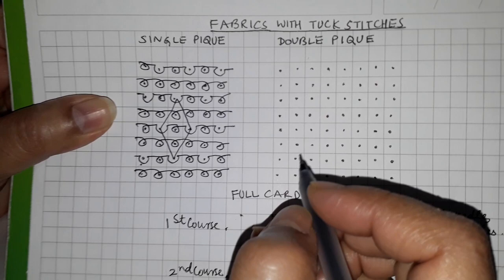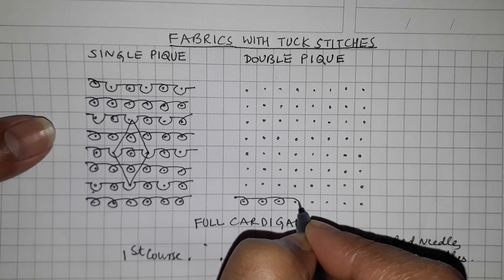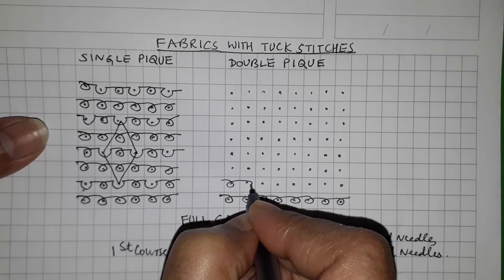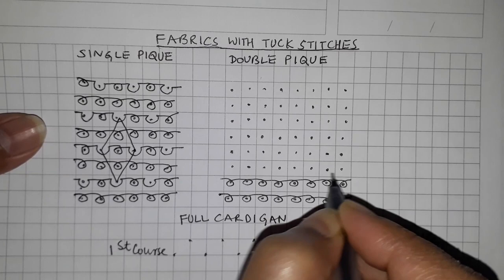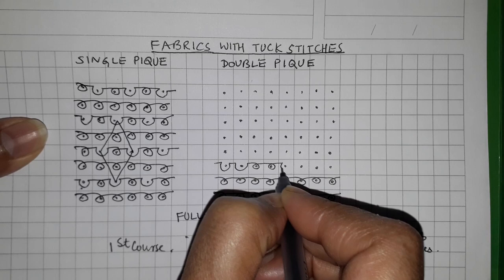Okay, let's look at double piqué. In a double piqué you could have two rows of knit stitches, two rows of tuck stitches, with the first two needles tucking, then the next two needles tucking.